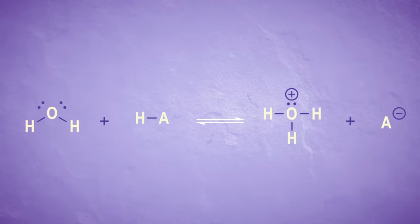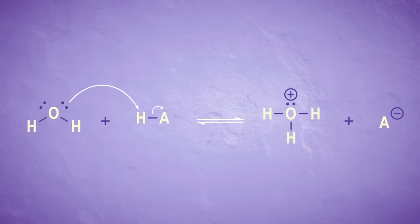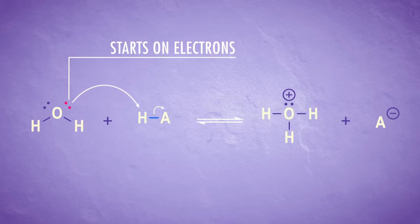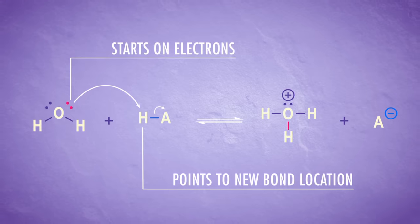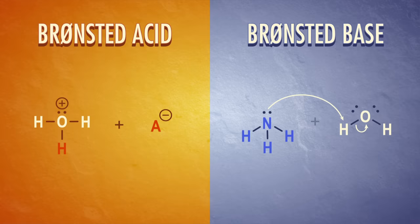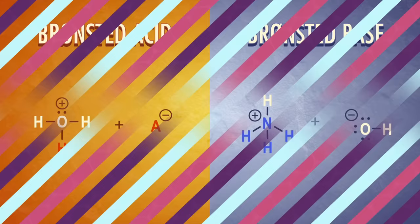Last episode, we learned how to use arrows to push electrons within a molecule to understand resonance structures. But we can also push electrons between molecules to show how bonds break and form using the same rules. We start on electrons and point to where a new bond is made. In the Brønsted-Lowry definition, an acid is anything that loses a proton, also known as a plus-one charged hydrogen ion. And a base is anything that accepts a proton.